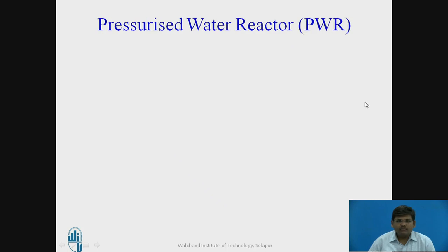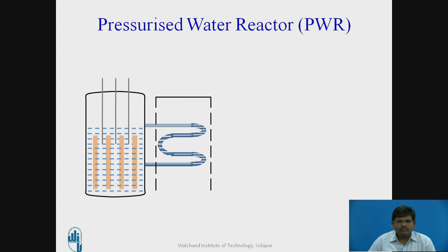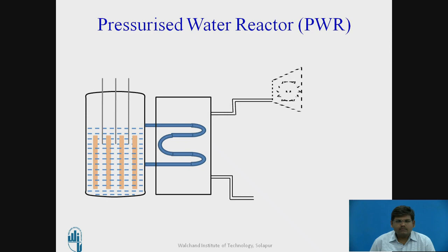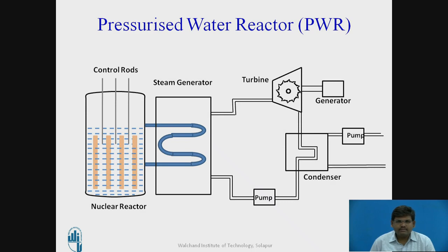Now, let us see how a pressurized water reactor works. This is the reactor, uranium fuel, control rods. This is the heat exchanger, turbine generator, condenser and cooling. The control rods, the nuclear reactor — this is the additional element that comes into picture, that is the steam generator. This is the thing which supplies steam to the turbine. This is the generator, this is the condenser, this is the feed pump which supplies cooling water, and this is the pump which supplies the hot condensate to be cooled to the cooling tower.